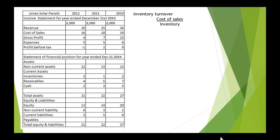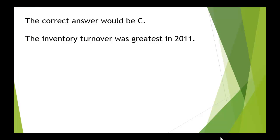To answer this, we need to work out the inventory turnover — that is cost of sales over inventory — for each year. In 2012 it works out as 5.3 times, in 2011 it works out at 18 times, and in 2010 it works out at 9.5 times. Going back to the original questions, the answer is C: the inventory turnover was greatest in 2011. That's a correct statement.